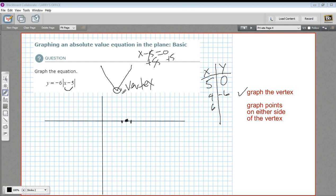If I put the 6 in here, I'm going to get the same thing. 6 minus 5 is a positive 1. Absolute value of that is still a positive 1 times negative 6, which is negative 6. So I've got 4, negative 6. There we go. And 6, negative 6.